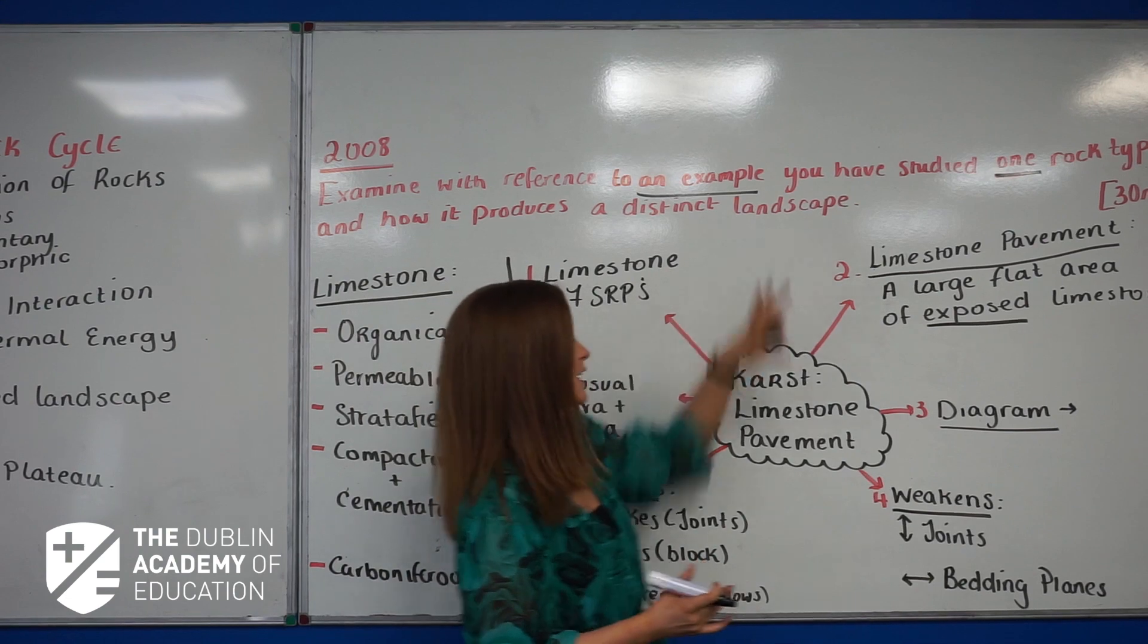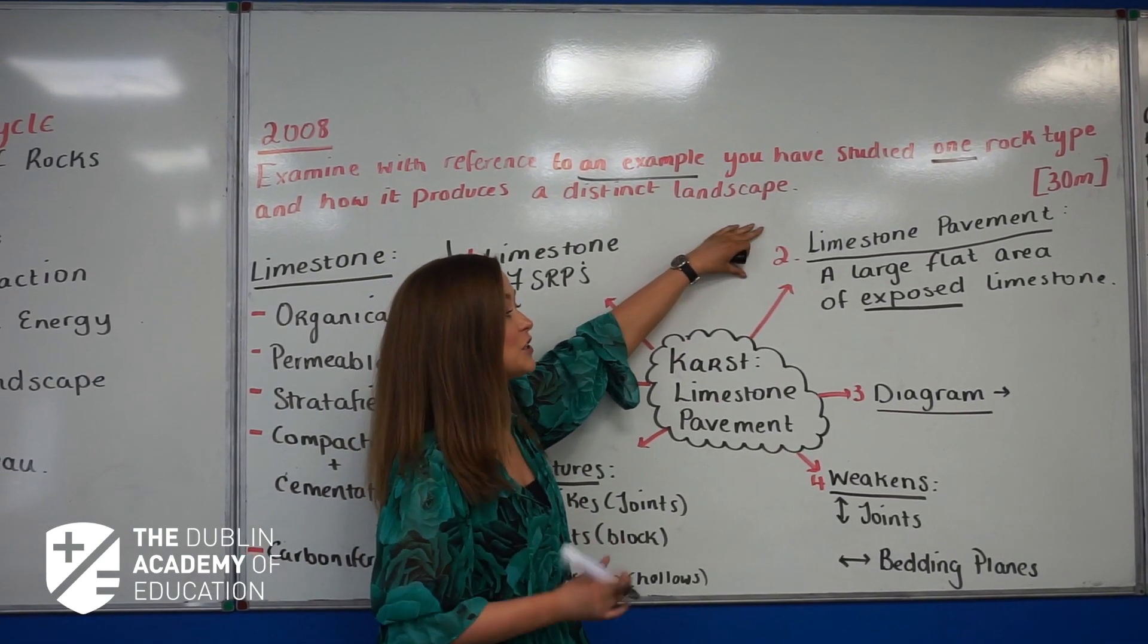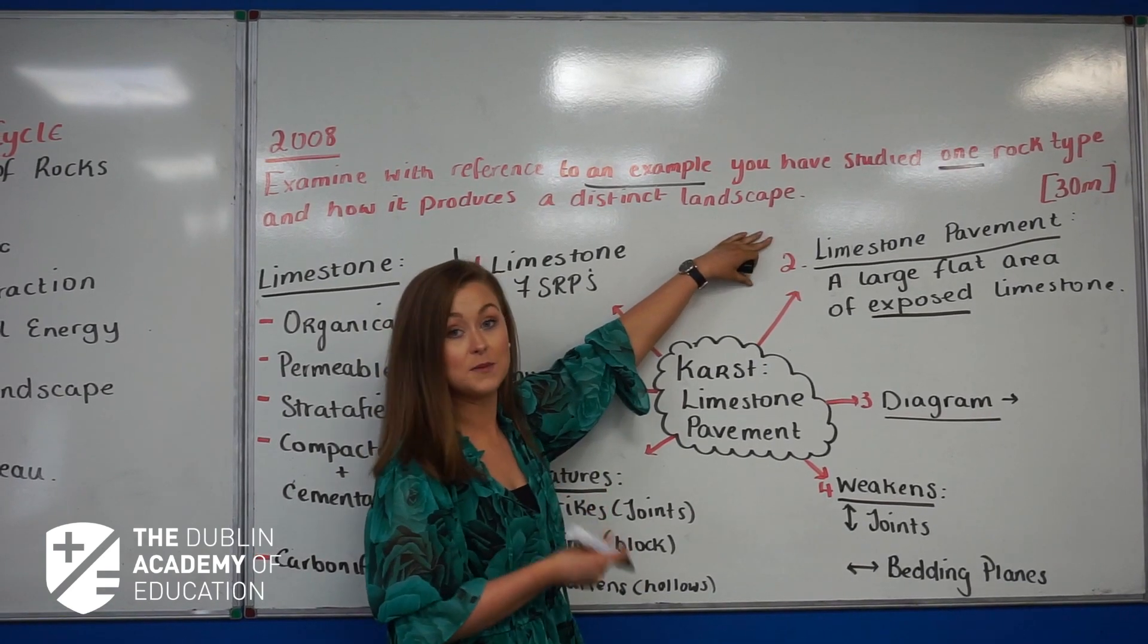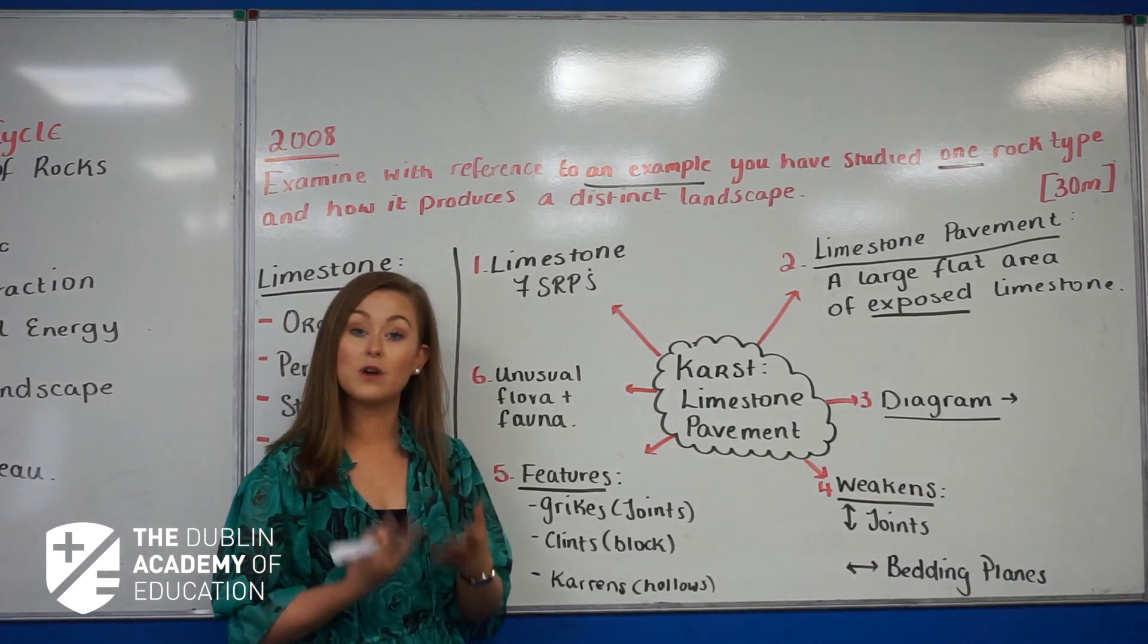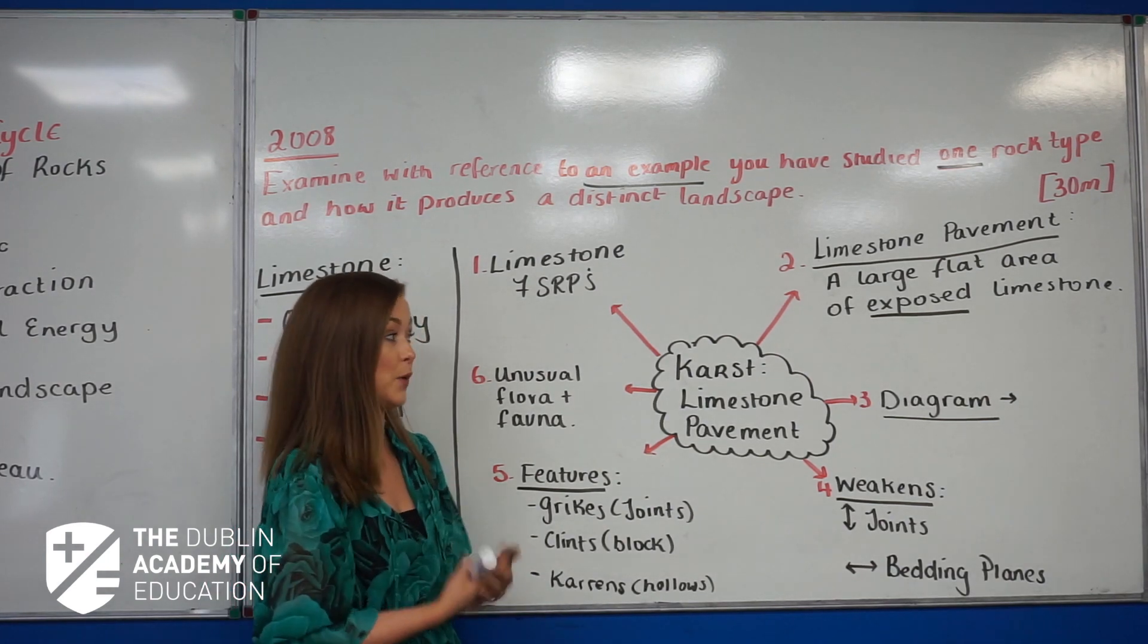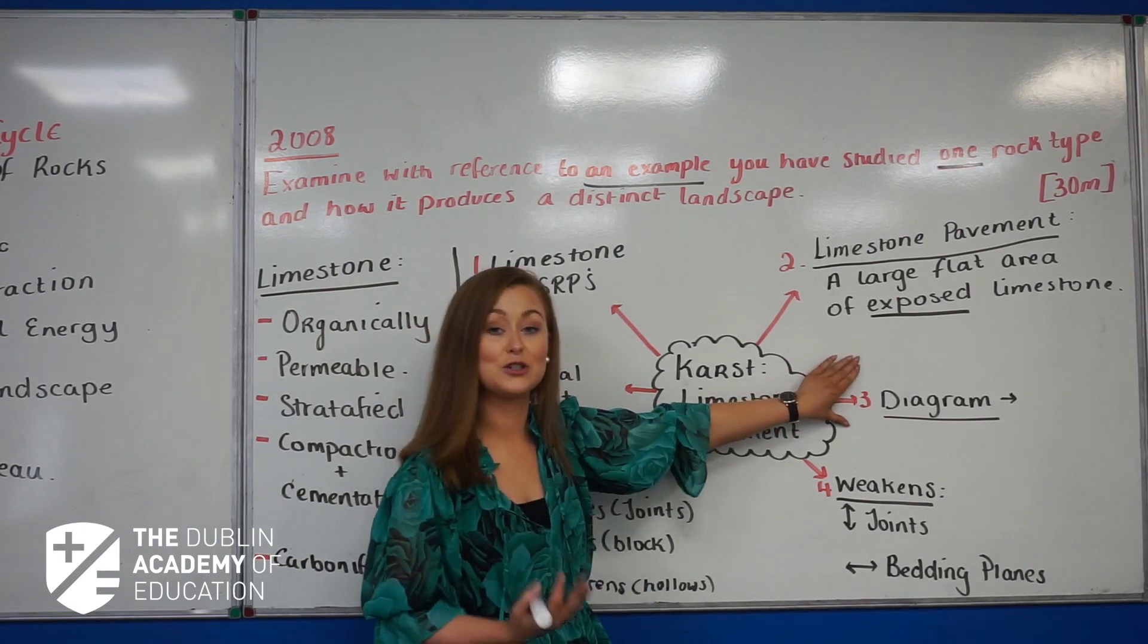Secondly, what we'll move on to is our karst region and defining our feature. The first feature we're going to discuss is a limestone pavement. A limestone pavement is a large area of exposed limestone, and where you'd find that exposed limestone is in the Burren, County Clare.